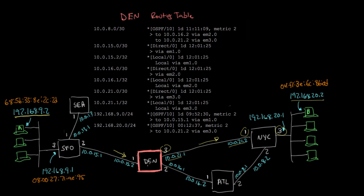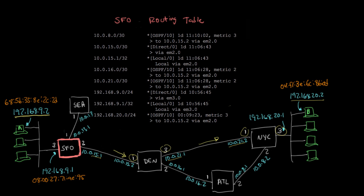In Denver's routing table, looking for 192.168.9.0/24 to match the destination 192.168.9.2, the entry says to send to 10.0.15.1 via interface EM1, shown with metric 2 — only two hops away now, getting closer. Finally at San Francisco, the routing table shows 192.168.9.0/24 as directly connected via EM3, so San Francisco can go ahead and deliver the packet on that Ethernet network.